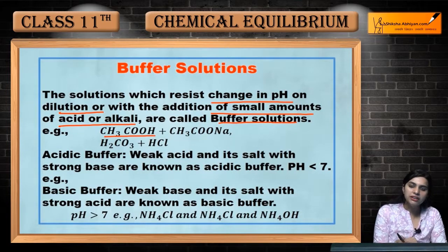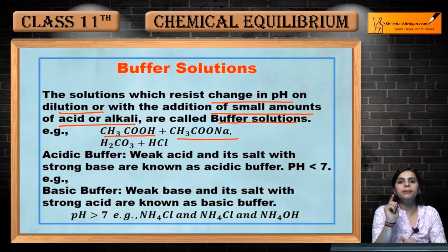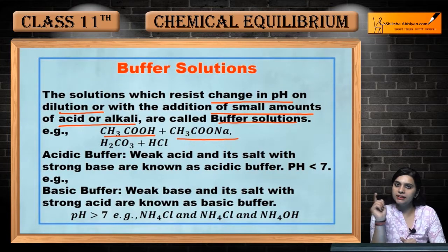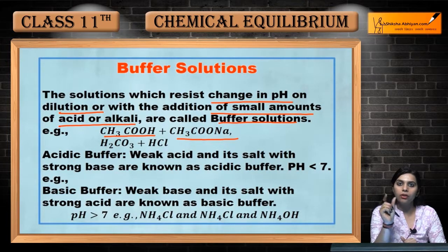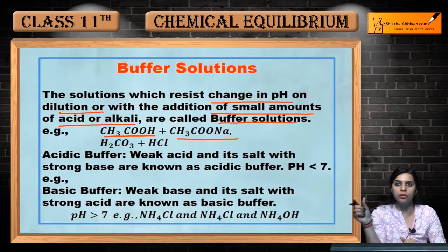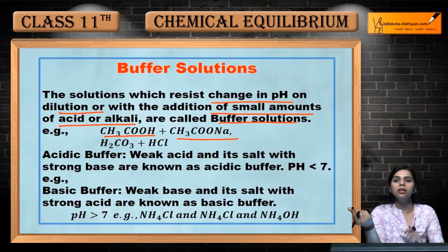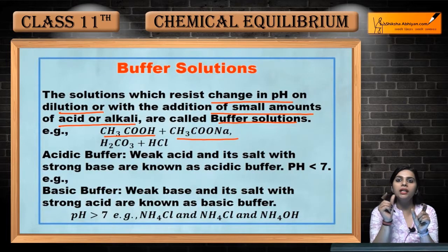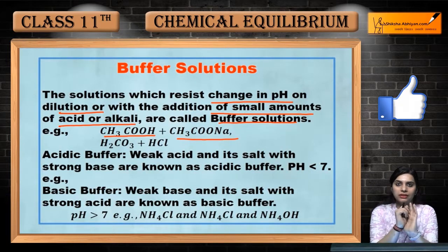Example: CH3COOH plus CH3COONa. If it is an acidic buffer, it will be a weak acid and it will have a salt with a strong base. If it is a basic buffer, it will be a weak base but it will have a salt with a strong acid.